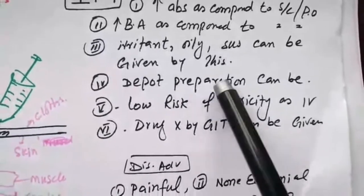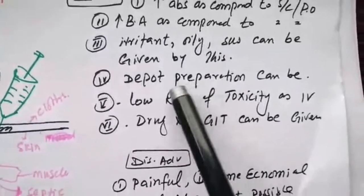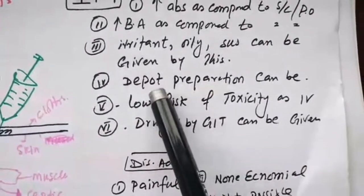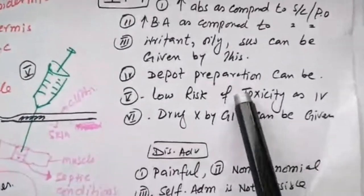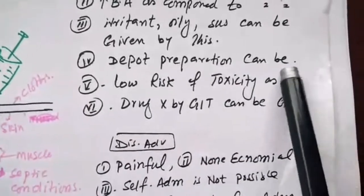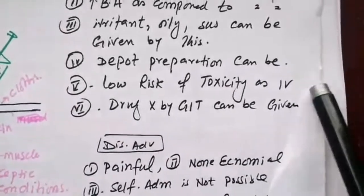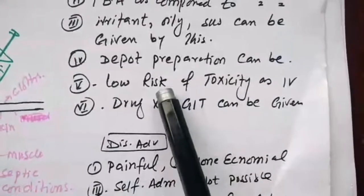For example, penicillin, procaine penicillin in arthritis - we give injection after one month. There is low risk of toxicity as compared to IV because IV line can cause toxicity, but IM does not have that toxicity.